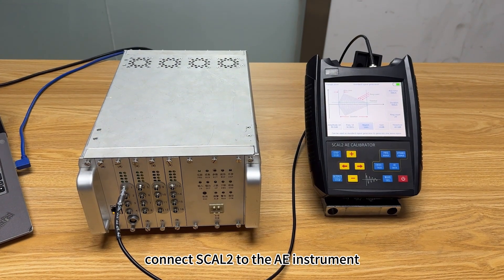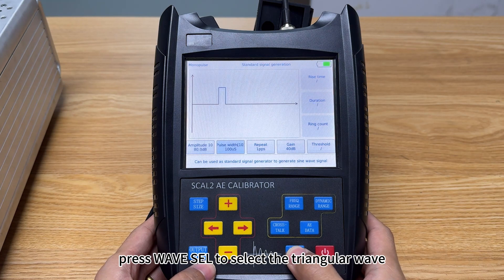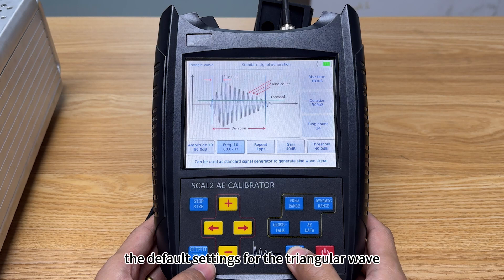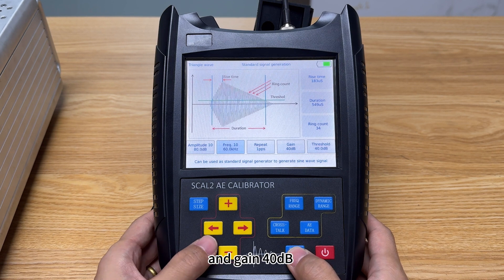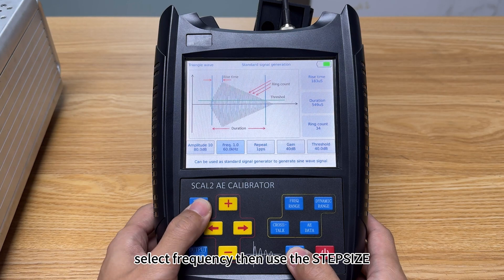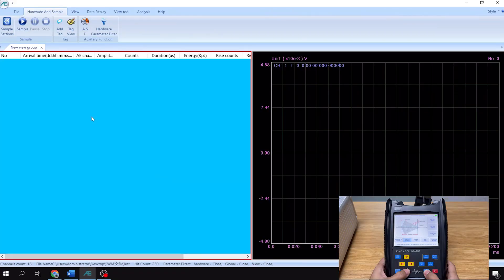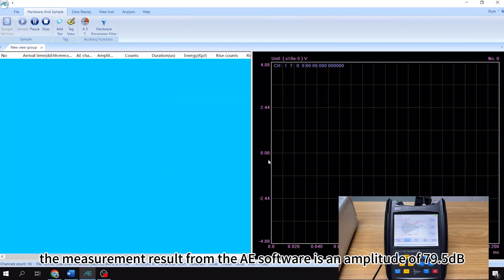Connect SCAL-2 to the AE instrument. Press WAVE-SEL to select the triangular wave. The default settings for the triangular wave signal are amplitude 80 dB, frequency 60 kHz, and gain 40 dB. Select frequency, then use the step size and minus key to adjust the frequency to 30 kHz. Press output. The measurement result from the AE software is an amplitude of 79.5 dB.